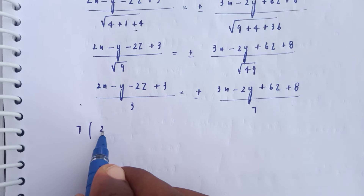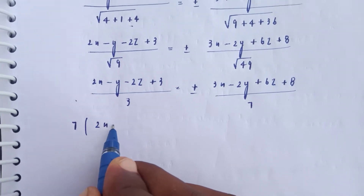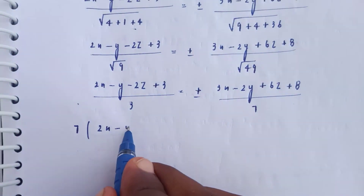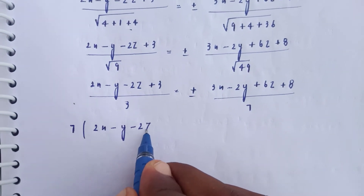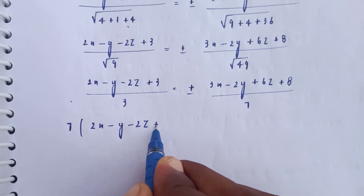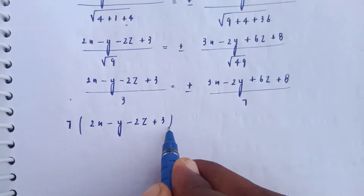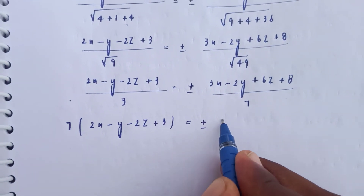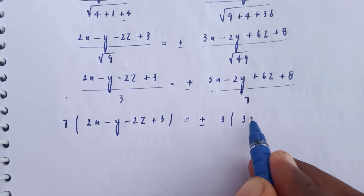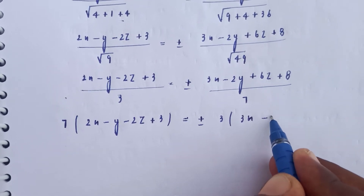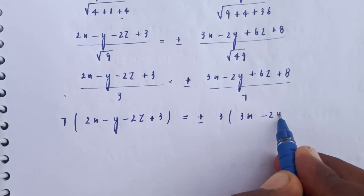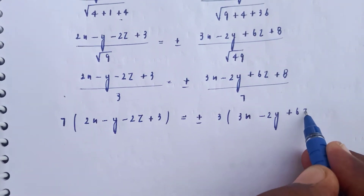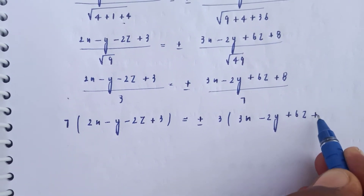Expanding by cross multiplication: 7 into (2x minus y minus 2z plus 3) plus or minus 3 into (3x minus 2y plus 6z plus 8).